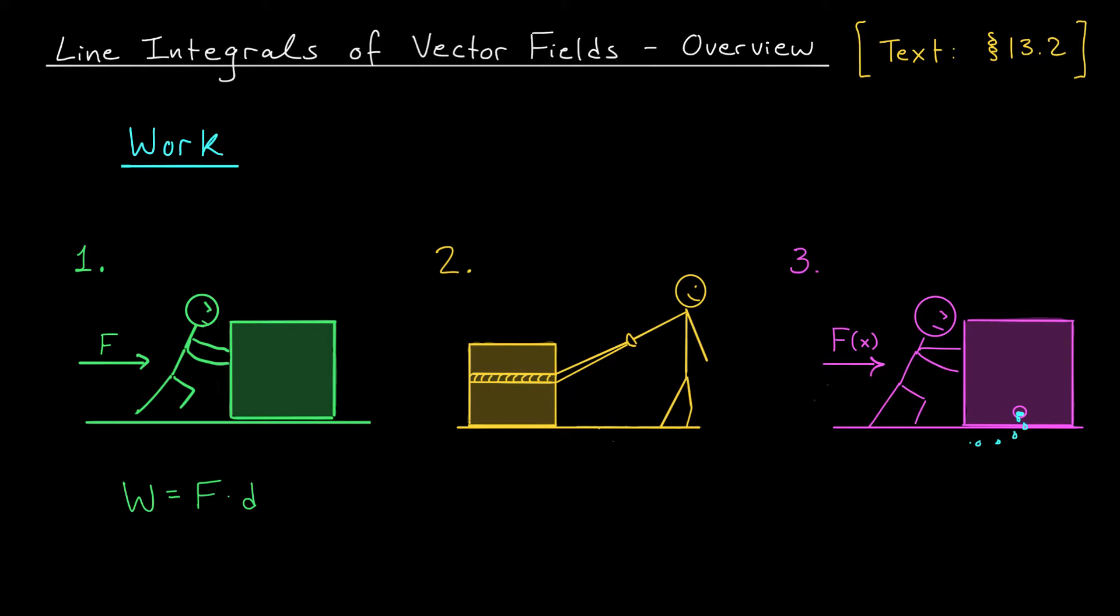Now there are a couple ways that we can increase the sophistication here. For instance, we could apply the force not in the direction of the box's movement but maybe at an angle. Take this second scenario for example, here I'm pulling the box using a handle and so the force is actually being applied in this direction. Some of that force, this horizontal component specifically, is helping to move the box forward, but this vertical component is not.